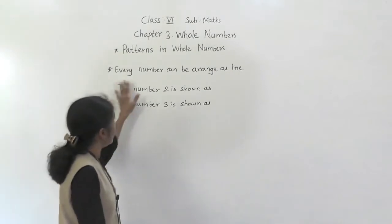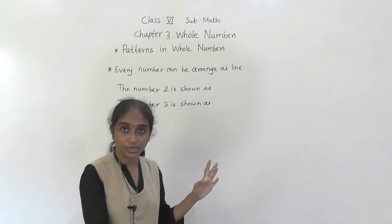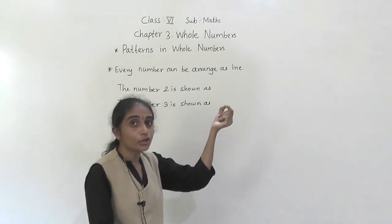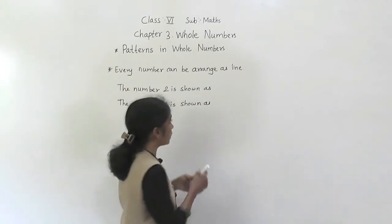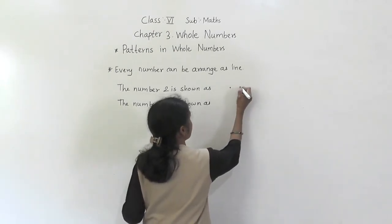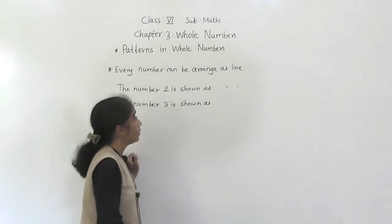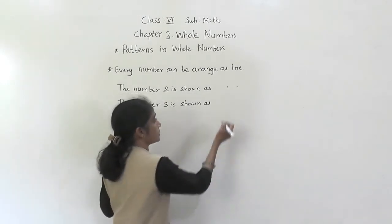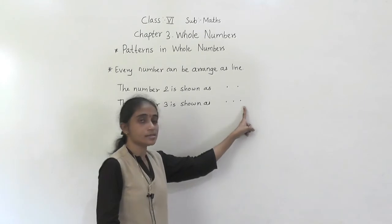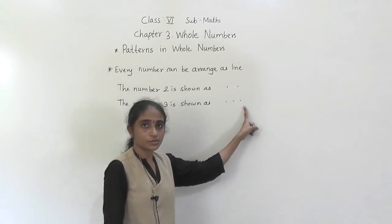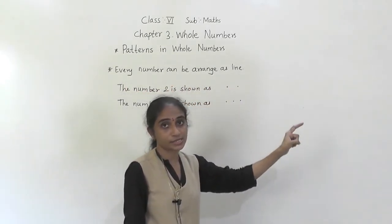Every number can be arranged as a line. One dot alone cannot really form a line pattern. The number 2 can be shown as a line: two dots in a row. The number 3 can also be shown as a line: 1, 2, 3. So every number can be arranged as a line.